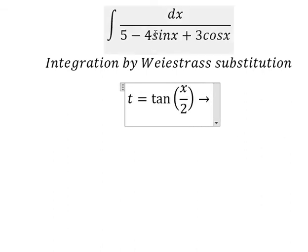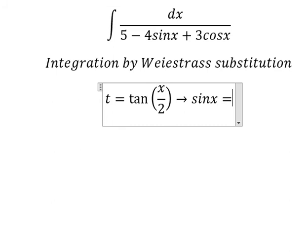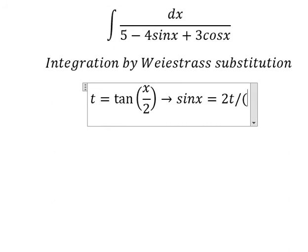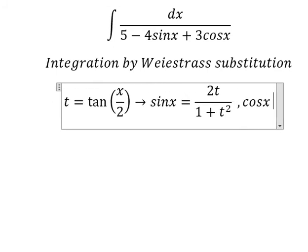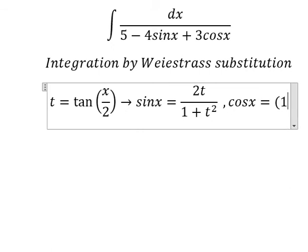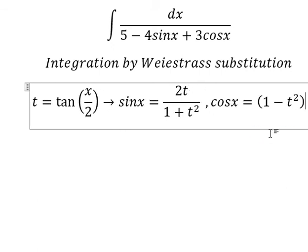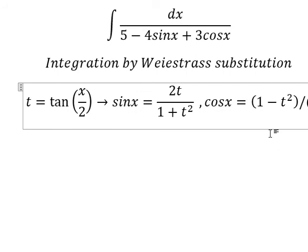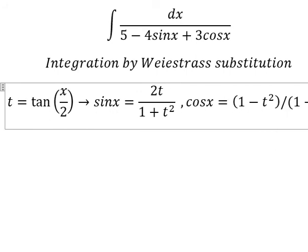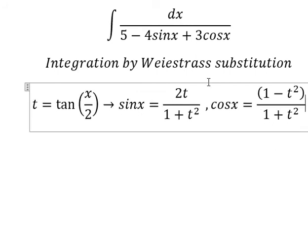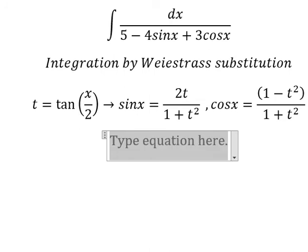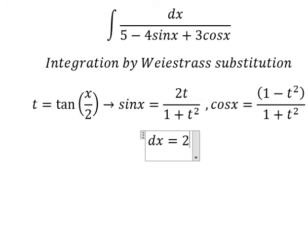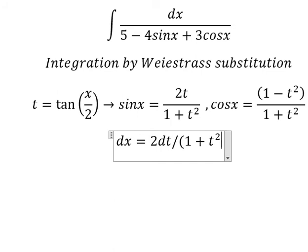So we need to change sine x into 2t over 1 plus t square, and cosine x we change by 1 minus t square over 1 plus t square. So the next one, that is dx equal to 2 dt over 1 plus t square.